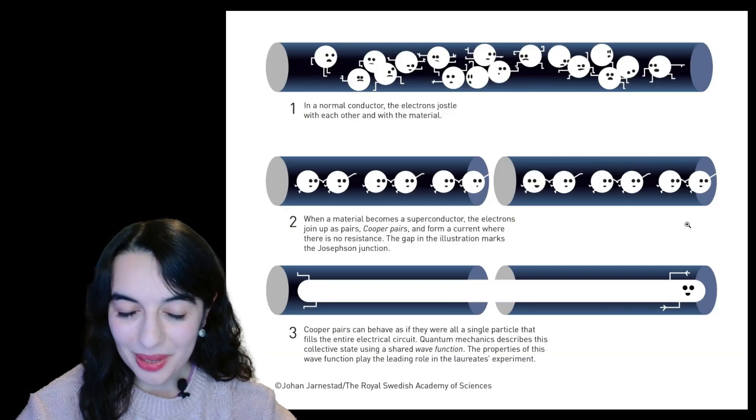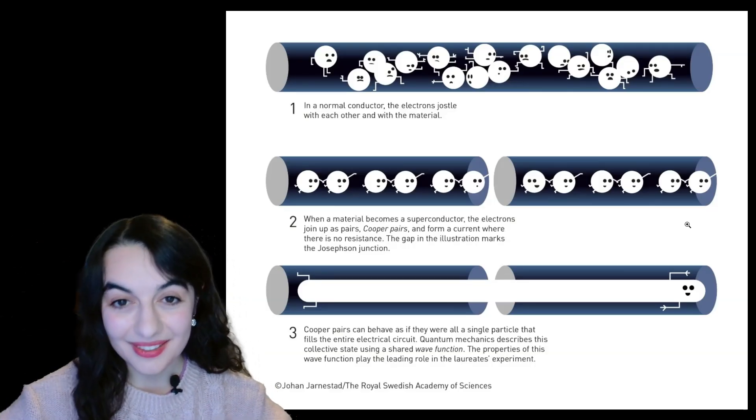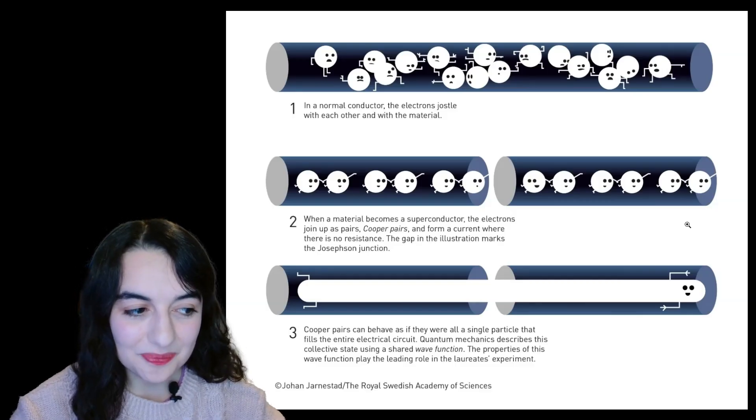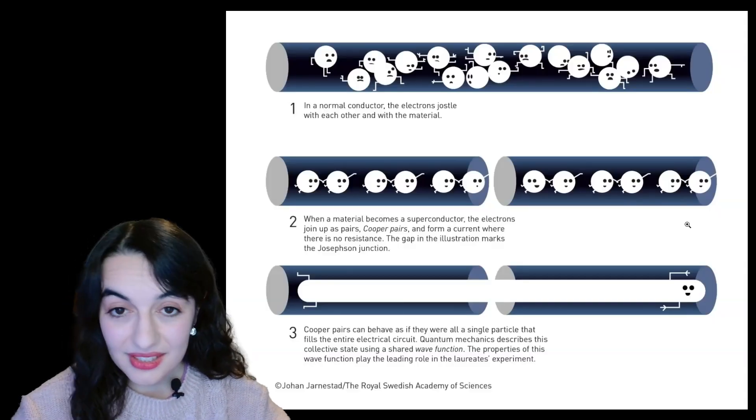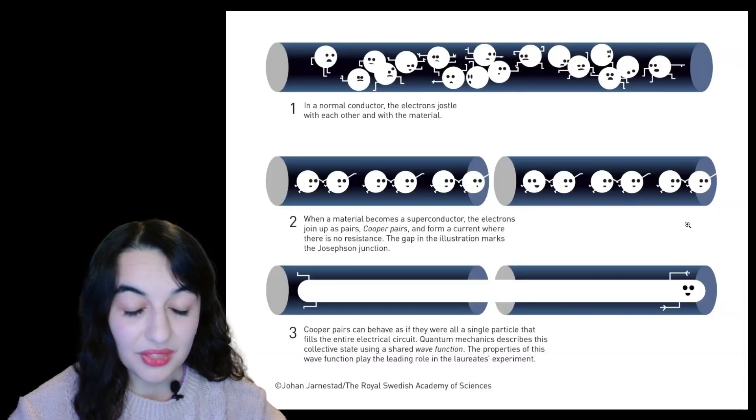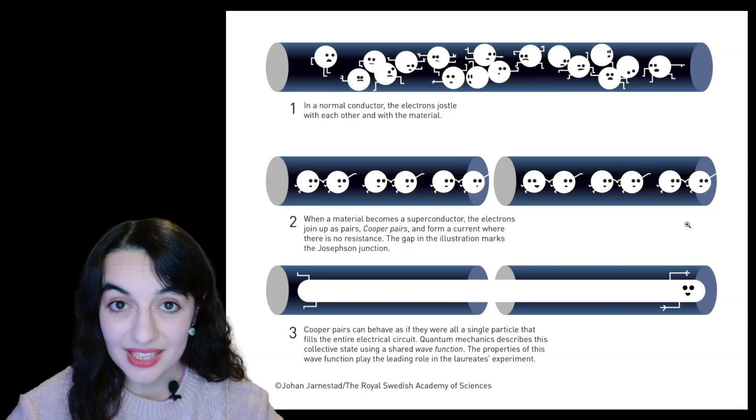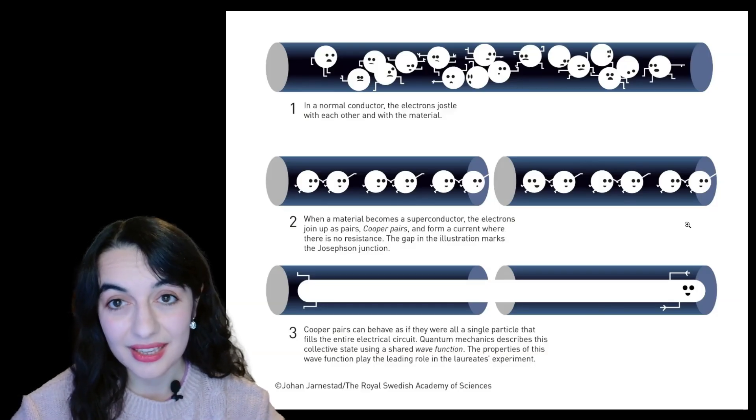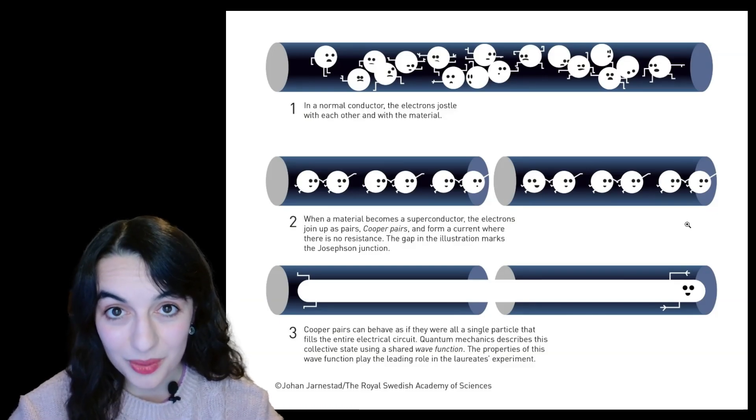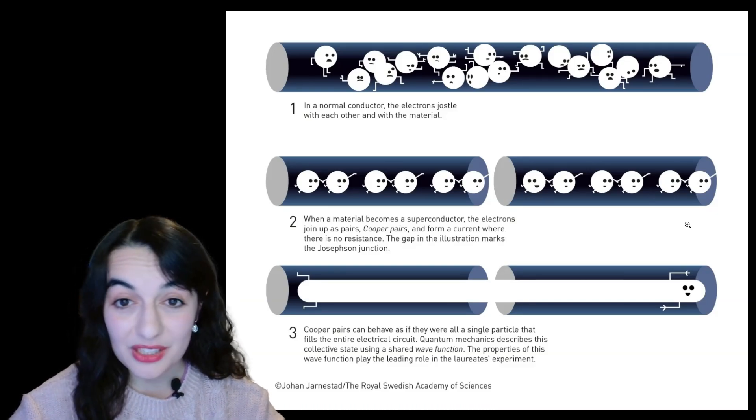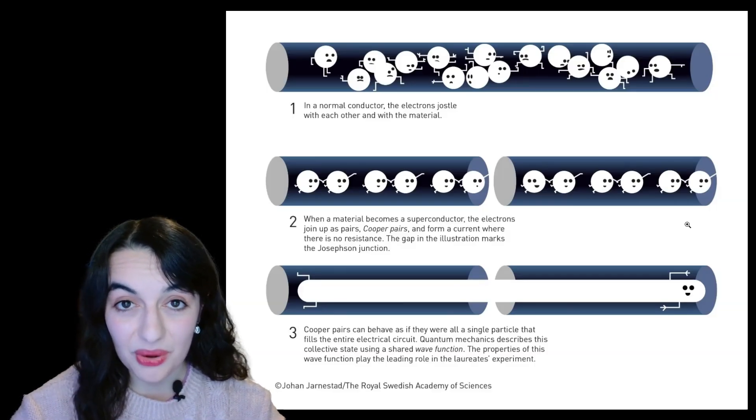So that's some of the quantum foundations side. Now, how about this other aspect of the quantisation of the energy levels? Well, this quantisation of energy levels means that you can create an artificial atom and the subsequent experiments after this one that researchers did demonstrated that you can actually manipulate these energy levels to implement a quantum bit, a qubit, which is the fundamental building block of quantum computers, more generally of quantum information processing technologies.